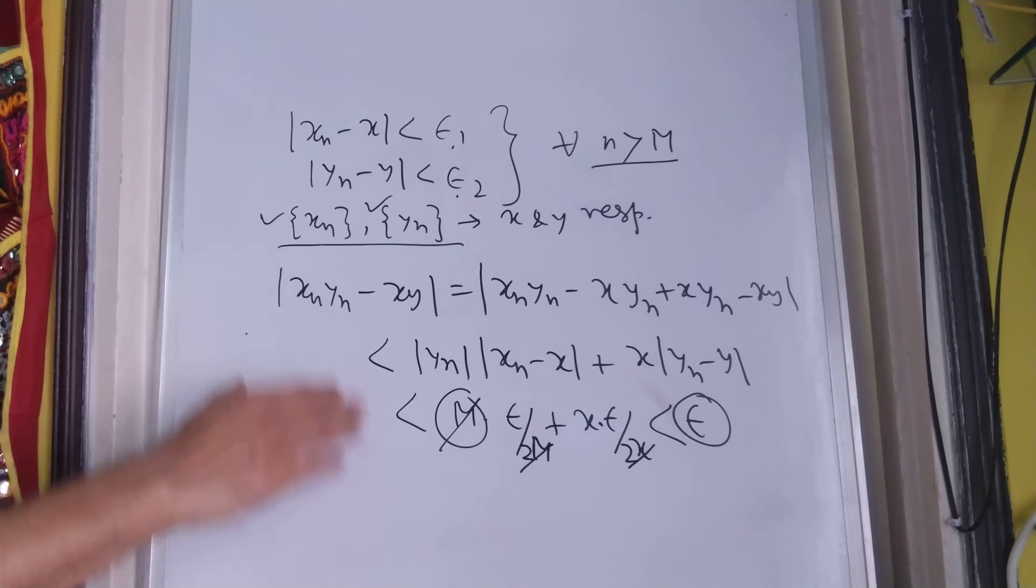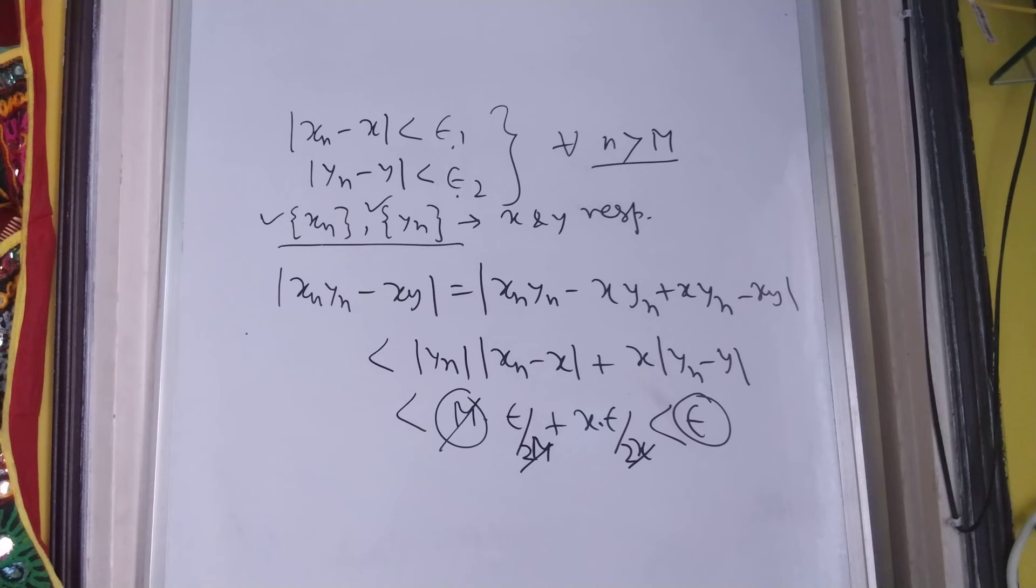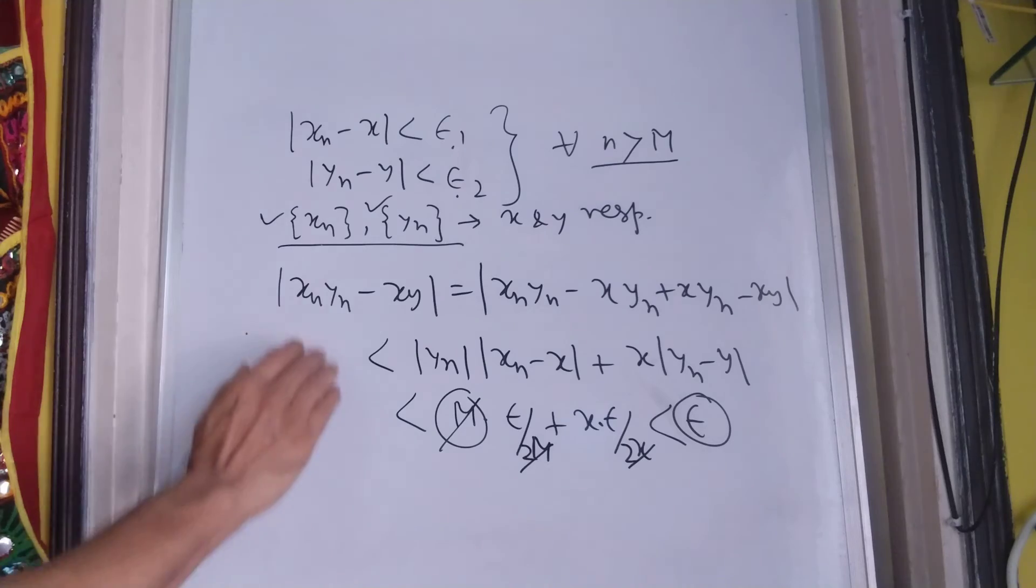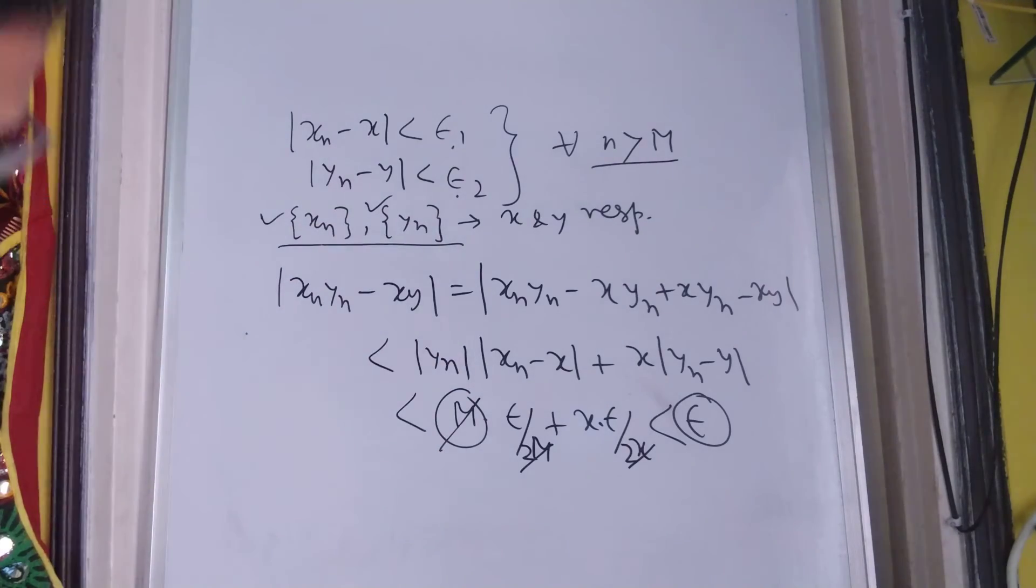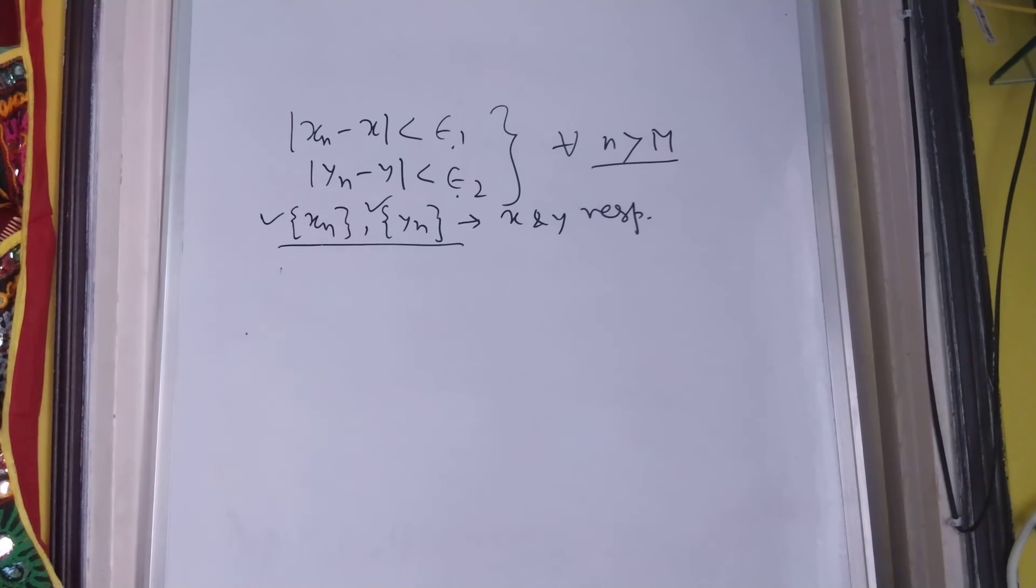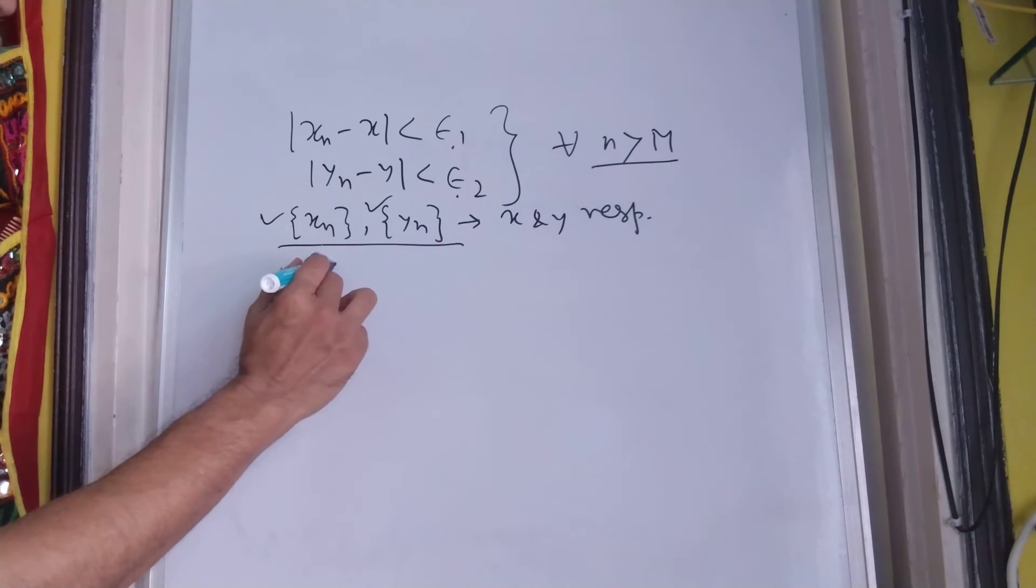And this is a very crucial proof and you can extend it to show that whenever you have sequence xn and yn, sorry whenever you have 2 sequences xn and yn, their ratio proportion is also convergent to the ratio of these 2 limits.